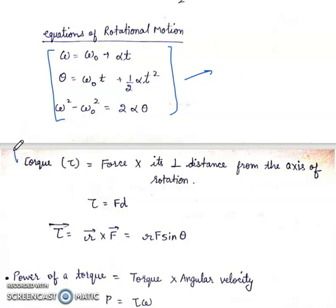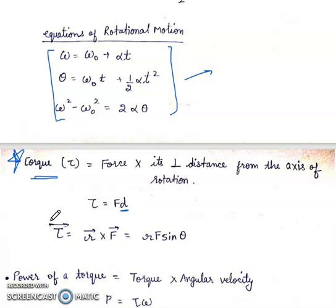Next is the formula of torque. Torque is given by force into perpendicular distance from the axis of rotation. The turning effect of force is basically torque. Torque equals F into D, where D is the perpendicular distance. In vector form, torque vector equals R vector cross F vector — that is the cross product of position vector and force vector — which equals R·F·sin(theta). And R·sin(theta) is basically the perpendicular distance.